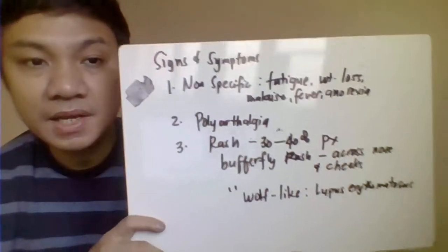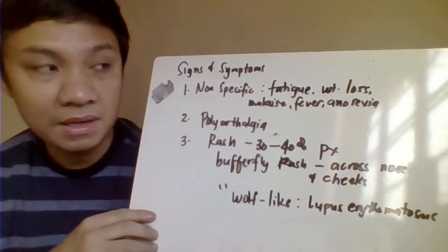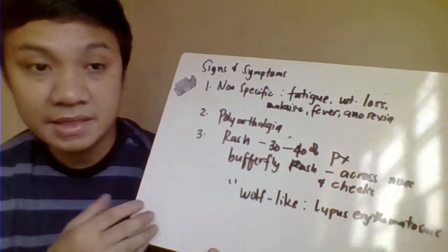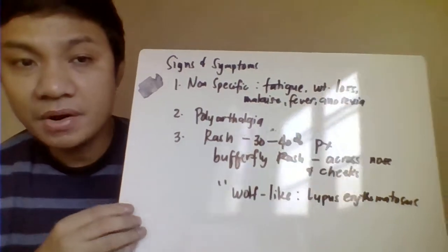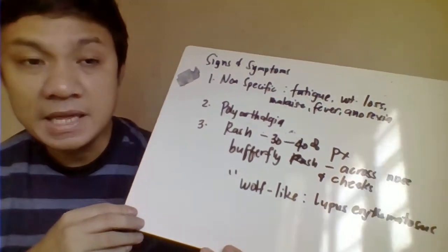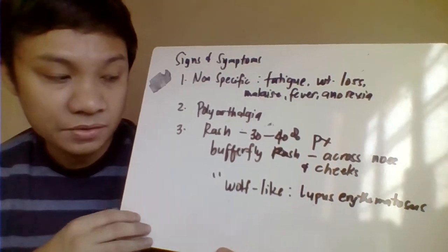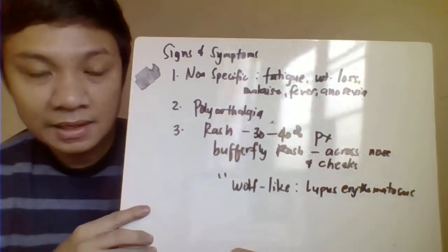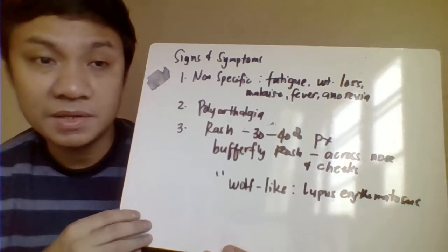Signs and symptoms of SLE begin with non-specific manifestations: fever, weight loss, malaise, and anorexia, followed by polyarthralgia or arthritis with joint pains. A characteristic finding is the butterfly rash — a malar rash across the bridge of the nose and cheeks — giving a wolf-like appearance that gives the disease its name 'lupus.' However, this butterfly rash is only present in 30 to 40% of SLE patients and is typically triggered by UV light exposure.